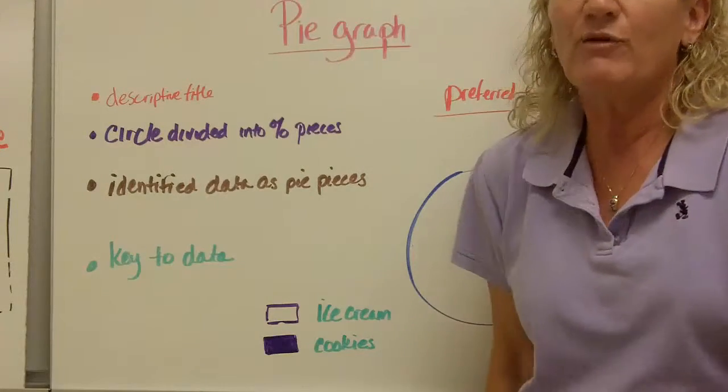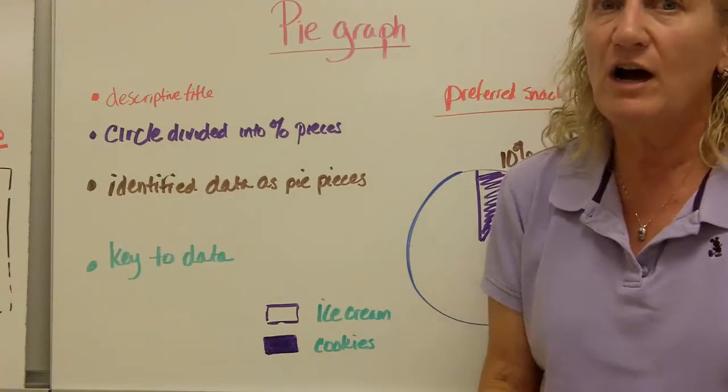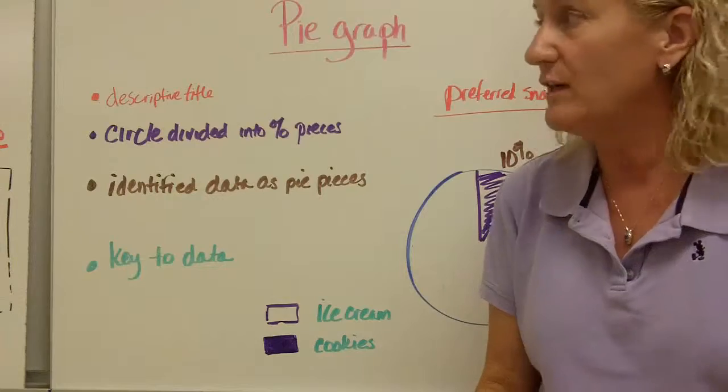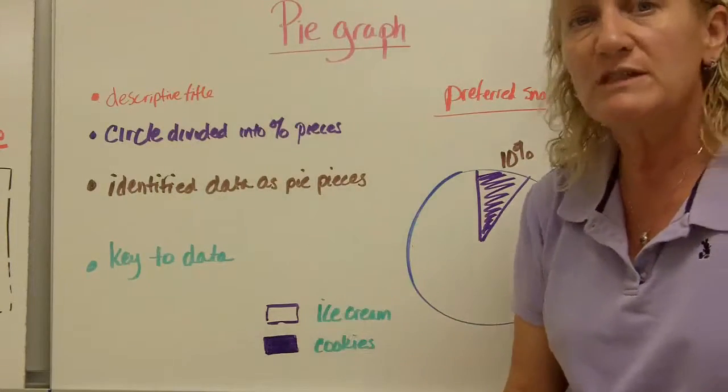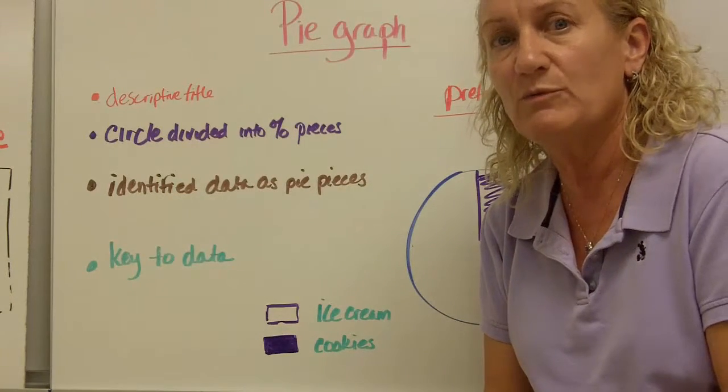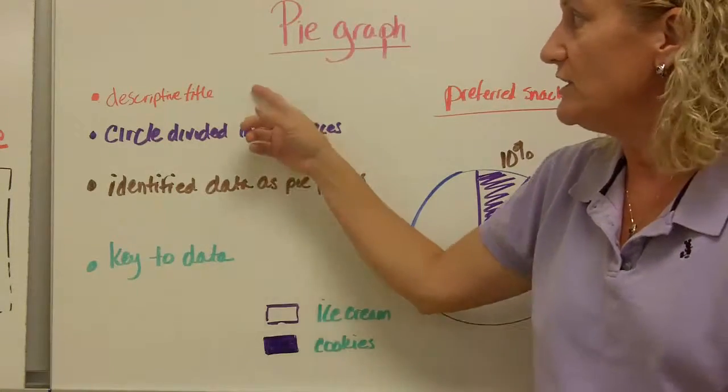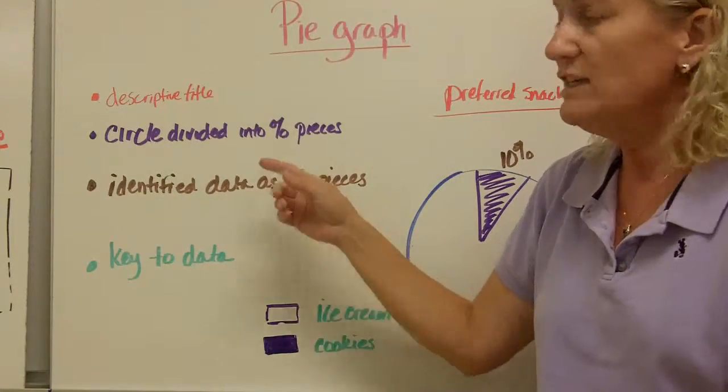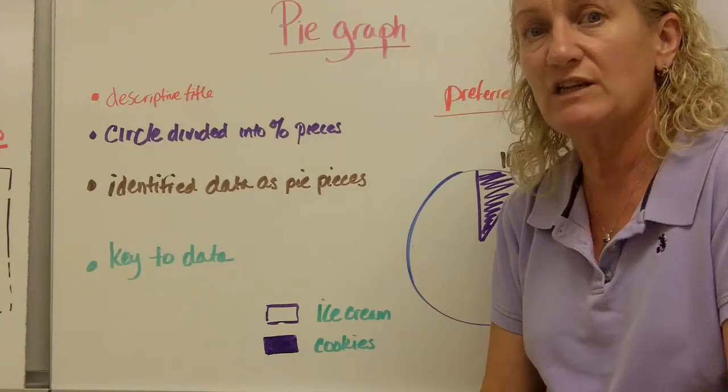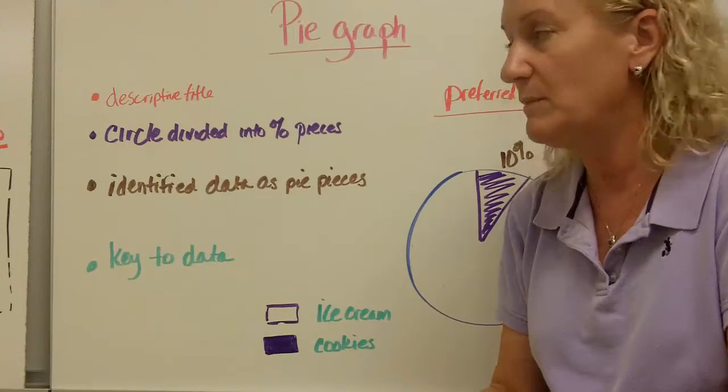We also have pie graphs. Pie graphs are circle graphs, obviously. They look like a pie. And they have four specific pieces that we need to see whenever you're writing a pie graph. First is a descriptive title. Second, the circle and it's divided into percentage pieces. I'll show you an example in just a minute.